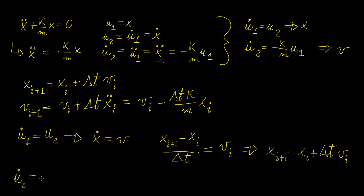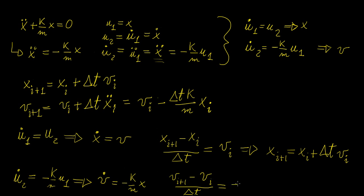For the second equation, u2-dot equals minus k over m times u1, which in terms of the original variables is v-dot equals minus k over m times x. Applying the Euler method gives (v_{i+1} minus v_i) over delta-t equals minus k over m times x_i, which rearranges to: v_{i+1} equals v_i minus delta-t times k over m times x_i. These two equations are coupled — the first contains v and the second contains x — so you need to solve for them simultaneously to get all values of x and v.